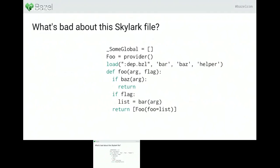There are a lot of things wrong in this example. For instance, it's missing all kinds of doc strings. First, we need a doc string at the top of the file describing what the file does. We also have a public function 'foo' that should have a doc string, at least if it's longer than a line or two. Also, load statements should be at the top of the file, because they're like import statements.